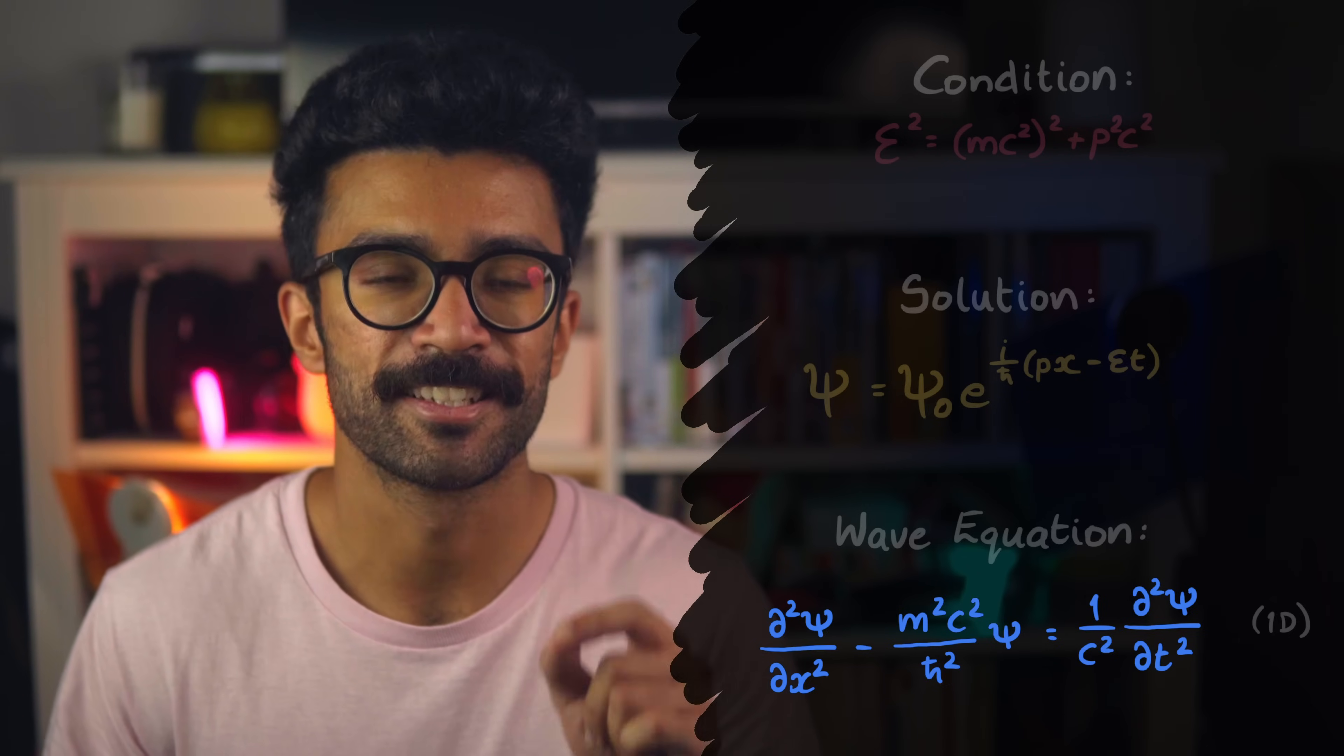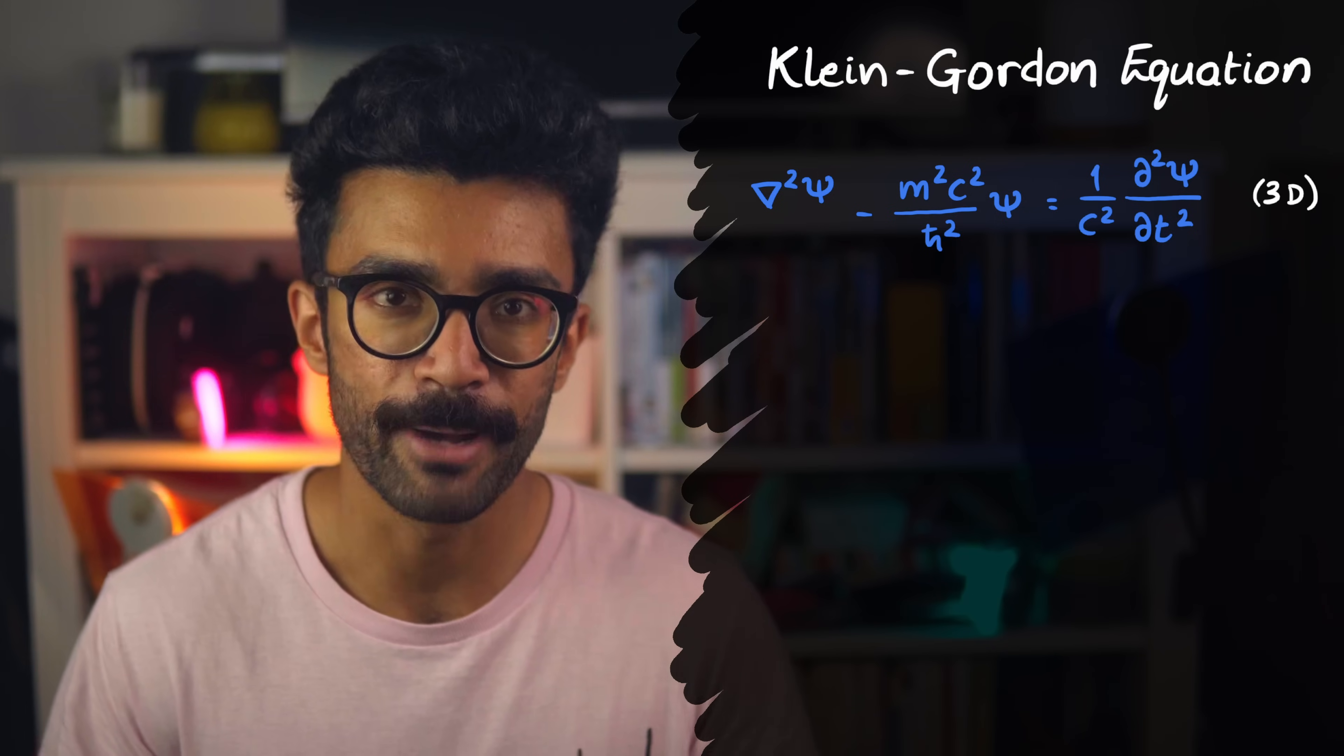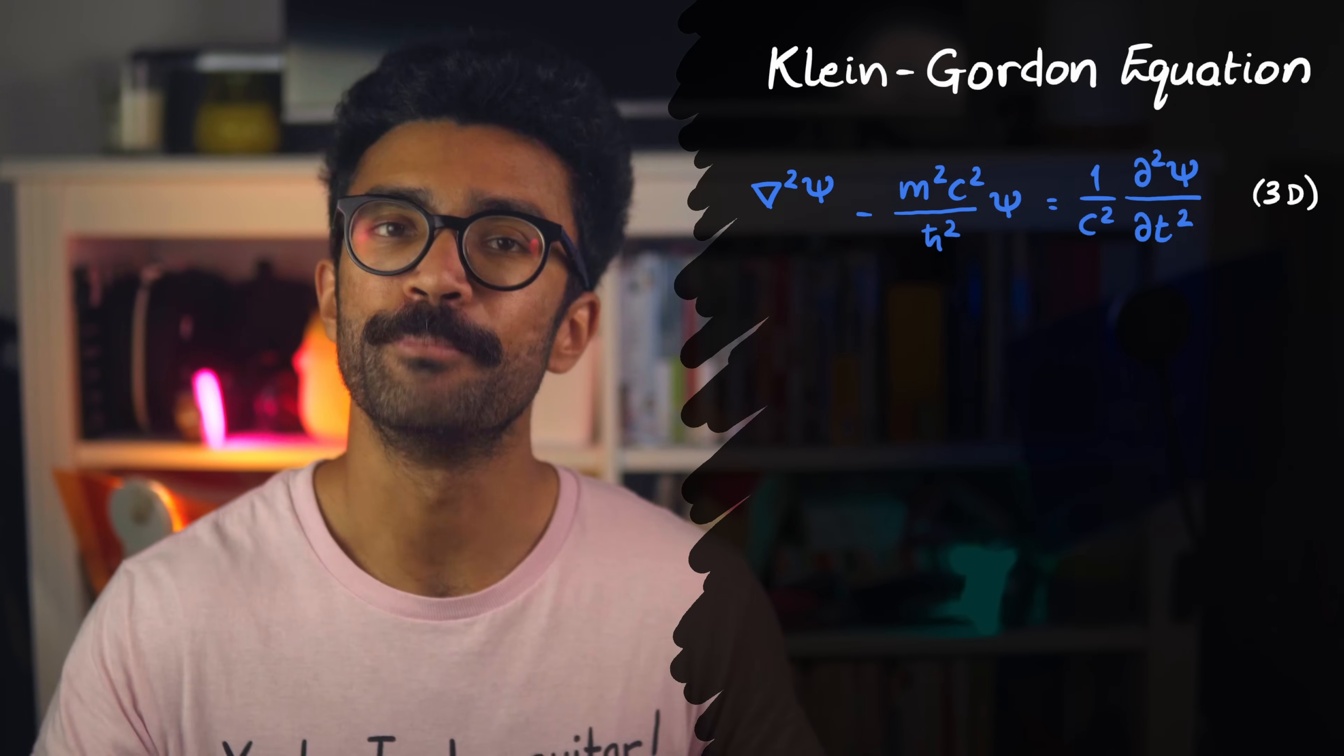Well, it would have to look like this. This equation is known as the Klein-Gordon equation. And as we hoped for, it's used to describe particles that have mass, and are also free to move, meaning they can have a momentum.